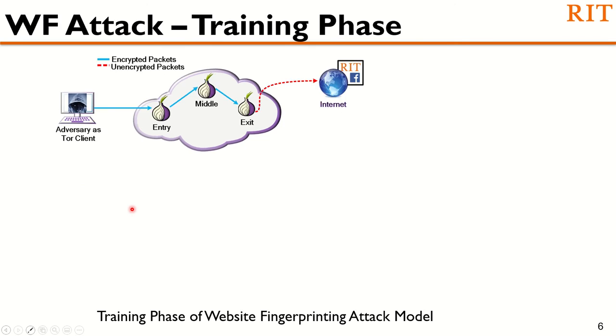Several research studies show that a website fingerprinting attacker can de-anonymize the activity of a Tor client just by analyzing the network traffic, even though those are encrypted. To perform the website fingerprinting attack, the attacker first needs to train a machine learning or deep learning classifier with the network traffic of the sites of his interest.